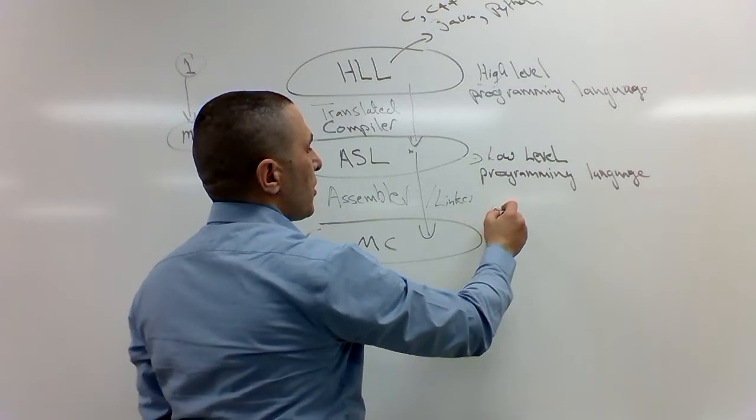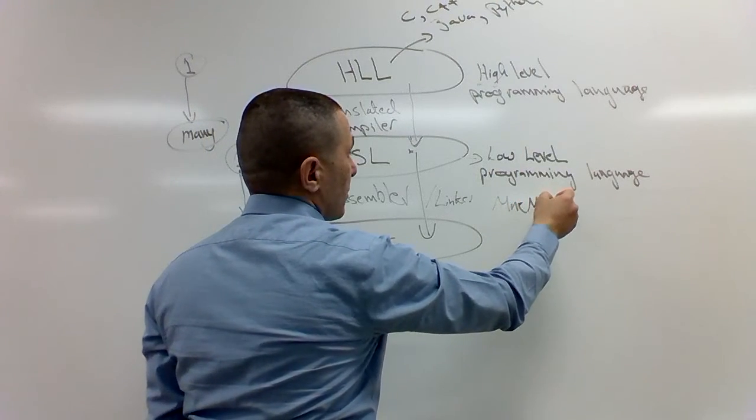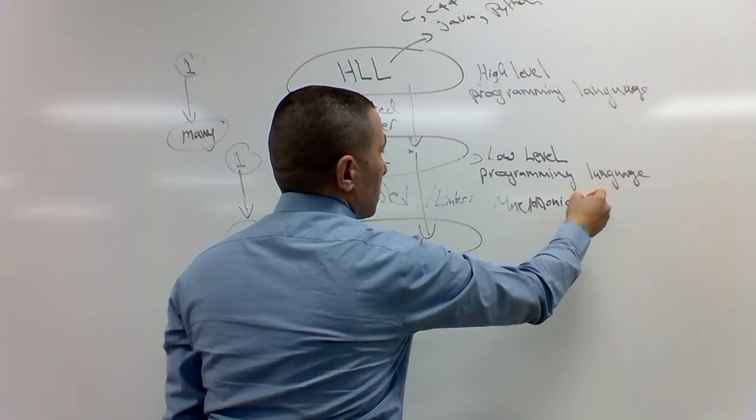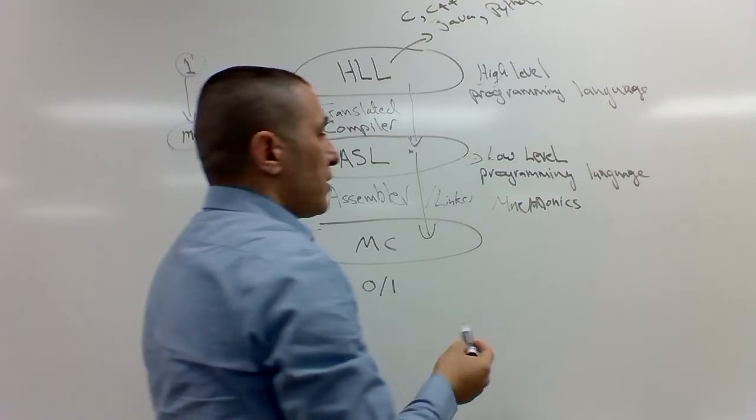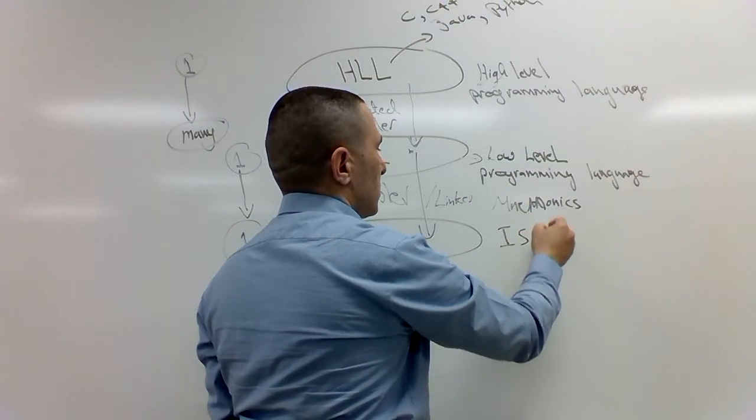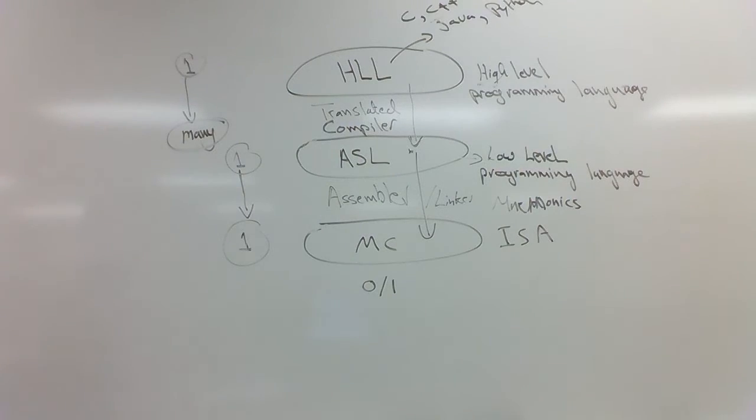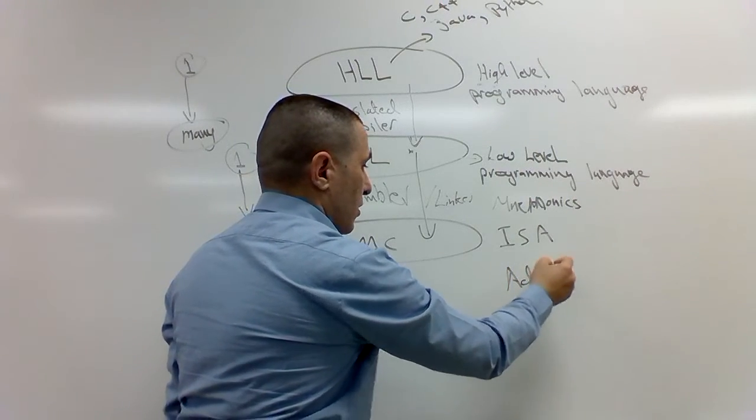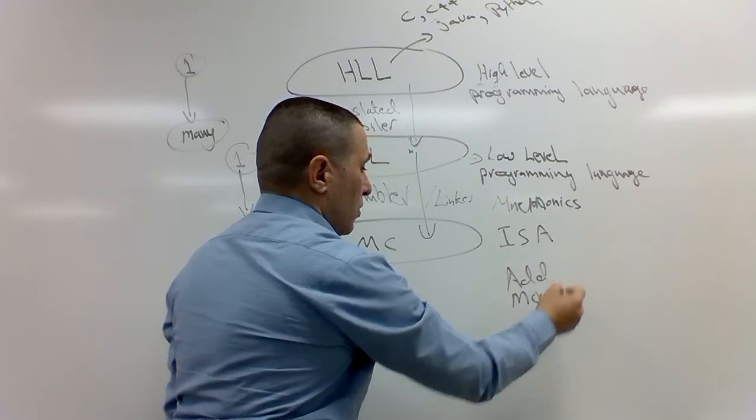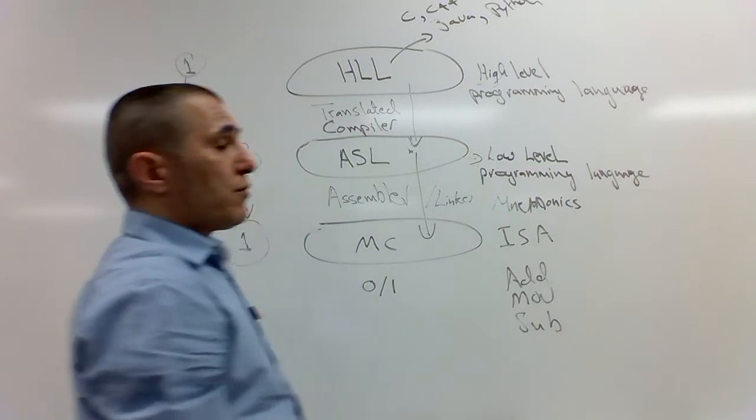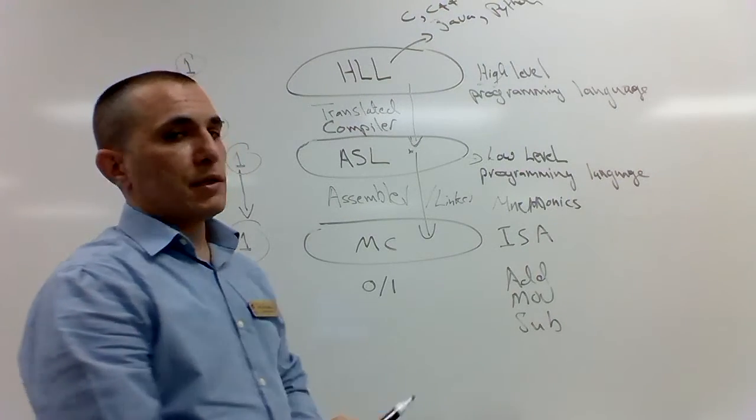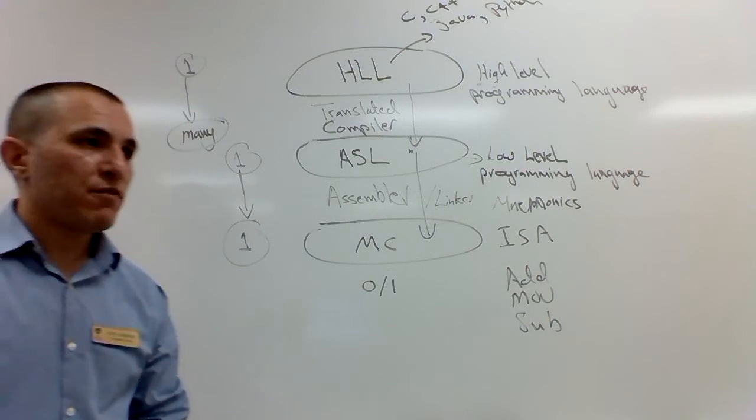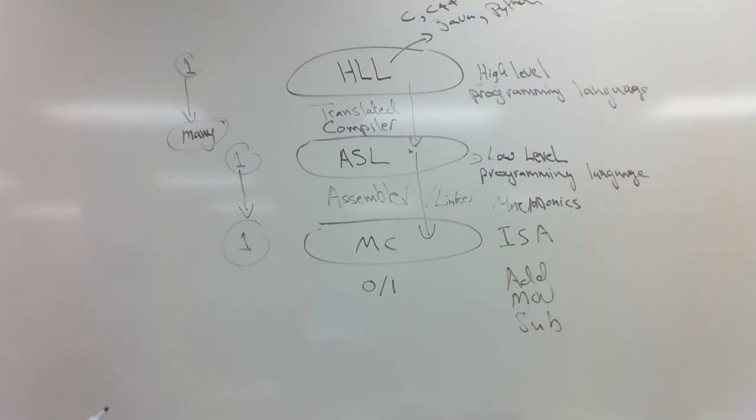Low-level language uses mnemonics or symbols to represent the instruction set. For example, I can have add, move, sub, load, all of those. Those are the instruction set of the language. I like to think of an instruction set of a language as the vocab of the machine, or the instructions that that machine can understand.